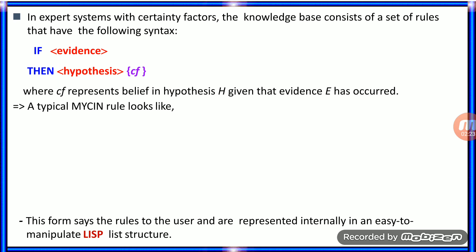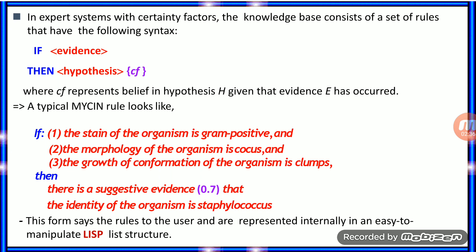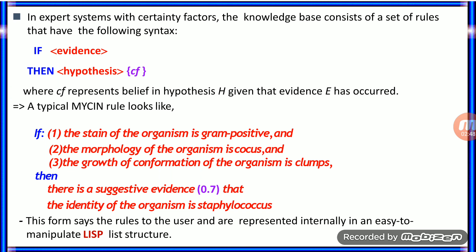A typical Mycin rule looks like: if the strain of the organism is gram-positive, and the morphology of the organism is coccus, and the growth confirmation of the organism is clumps — these are the evidence — then the hypothesis is there is suggestive evidence 0.7 that the identity of the organism is Staphylococcus. The CF value is 0.7, so it is supporting evidence.